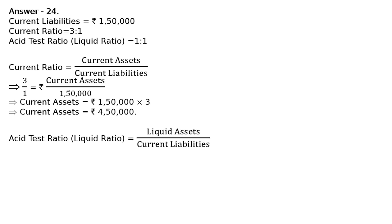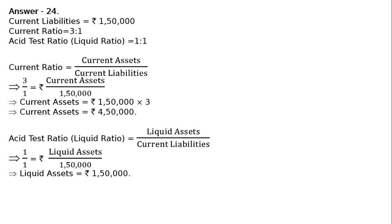Next, the acid test ratio or liquid ratio is equal to liquid assets upon current liabilities. That is equal to 1 upon 1, which implies that 1 upon 1 is equal to liquid assets upon current liabilities value Rs. 1,50,000. Therefore, liquid assets is equal to Rs. 1,50,000.